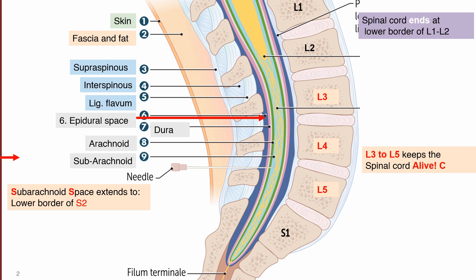So the complete route traced by the spinal needle is as follows: skin, fascia, fat, supraspinous ligament, interspinous ligament, ligamentum flavum, epidural space, dura mater, arachnoid mater, and finally the subarachnoid space. When we reach the subarachnoid space, we stop the needle and collect the cerebrospinal fluid.